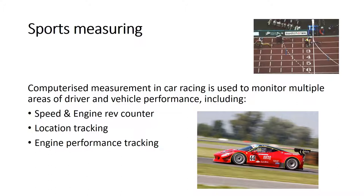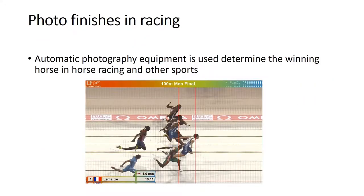Sports Measuring. Computerized measurement in car racing is used to monitor multiple areas of driver and vehicle performance, including speed and engine rev counter, location tracking, engine performance tracking, and photo finishes in racing. Automatic photography equipment is used to determine the winning horse in horse racing and other sports. Here is a photo of a finish from a 100-metre run.